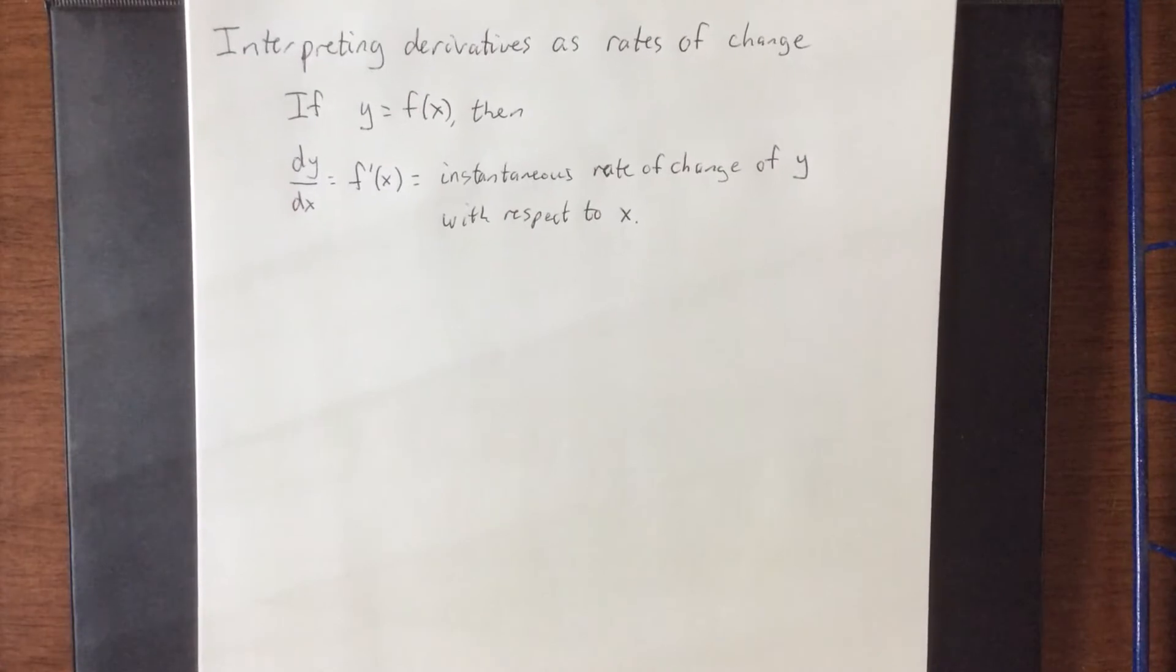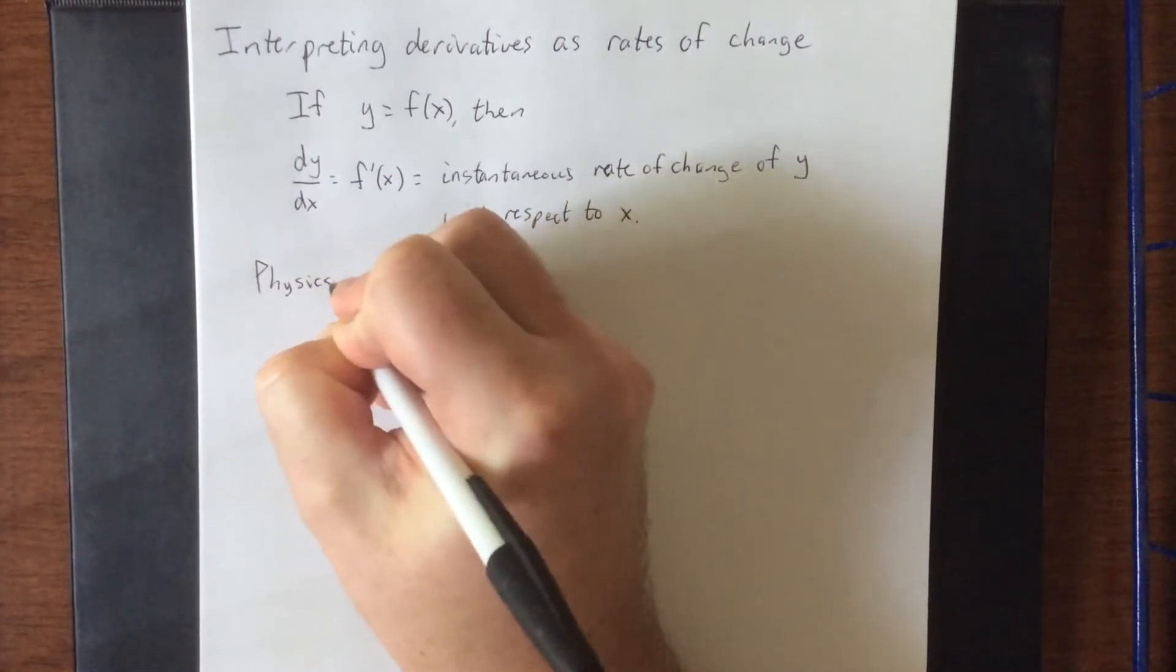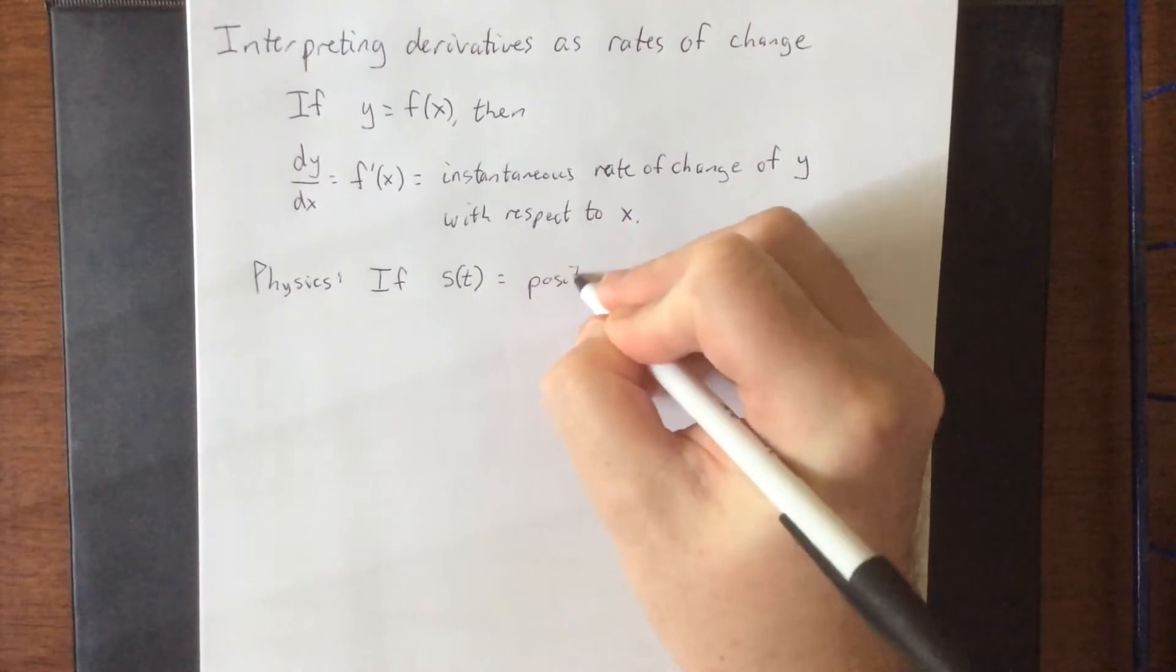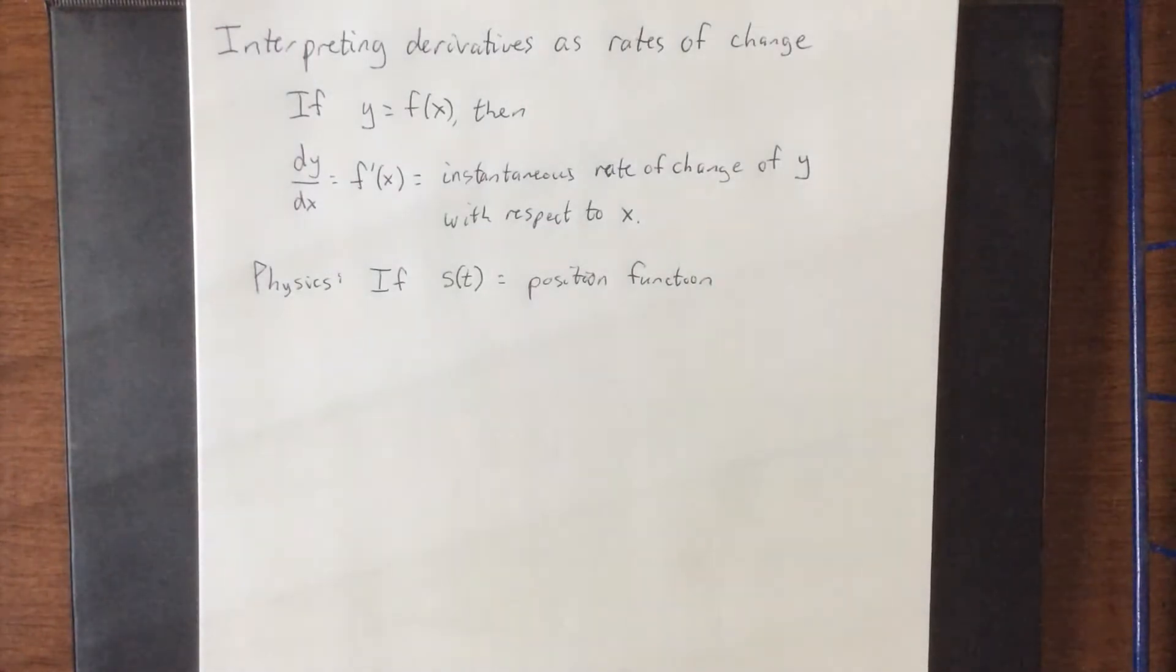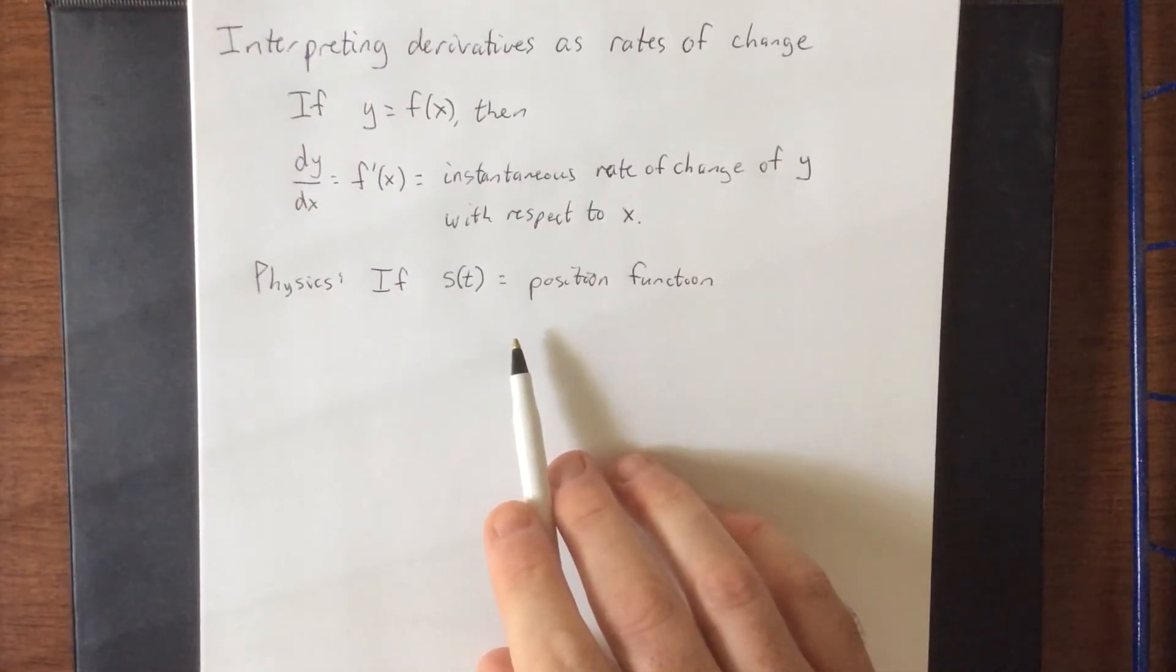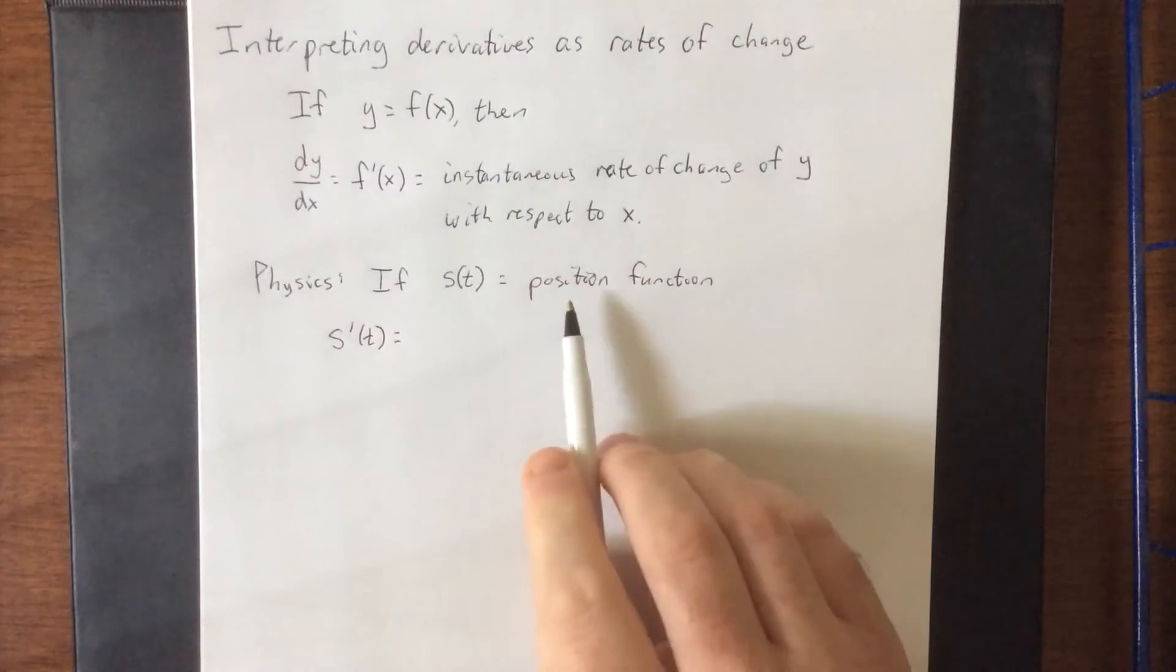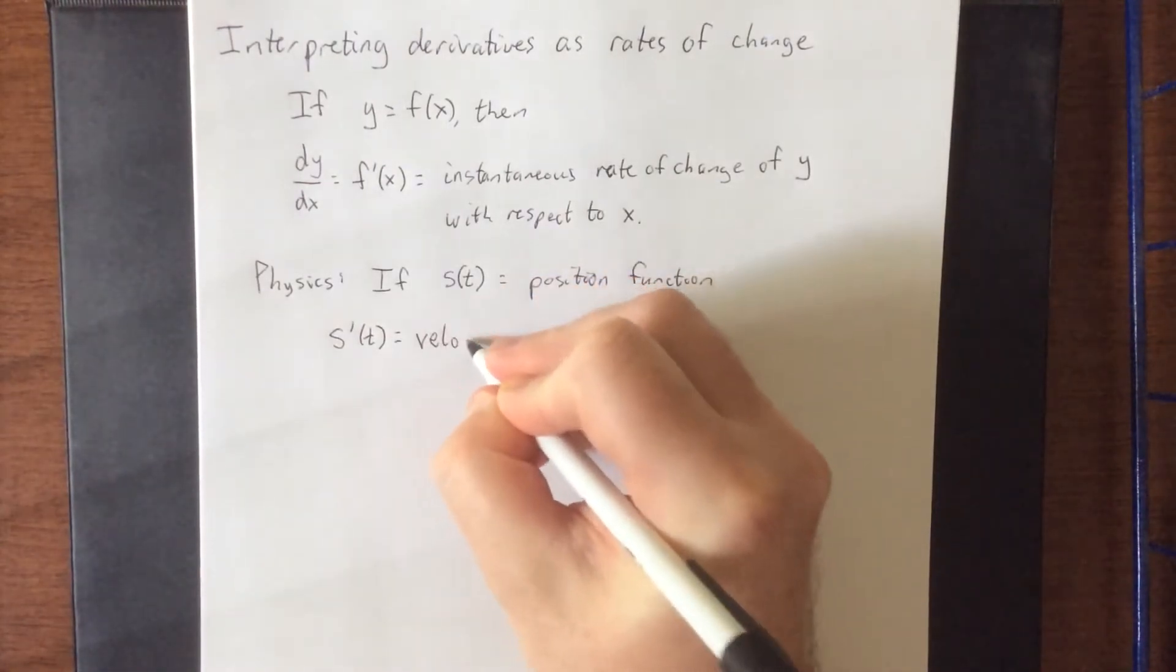So there are a couple of ways that we are going to be interpreting this. The first was in an application to physics. We'll use s to represent a position function. So as time changes, the position of an object changes. This object could be a ball flying through the air, a car driving down a road, lots of different things. So s prime of t would be the instantaneous rate of position with respect to time. So over the course of time, if something's position is changing, you get what's known as a velocity.